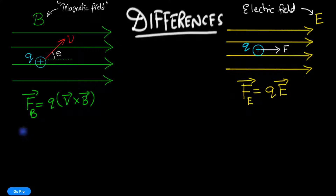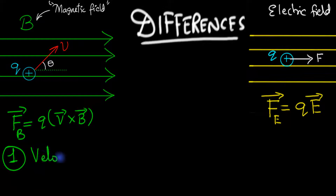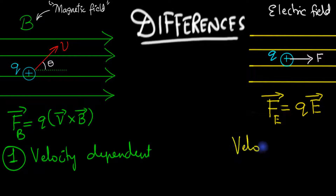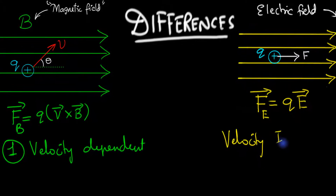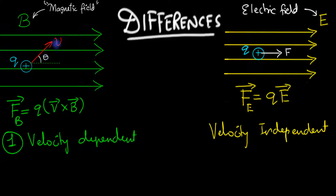The first difference — the obvious difference — is that the magnetic force is velocity dependent, whereas the electric force is velocity independent. If you want to know the electric force, whether the charge is at rest or moving, it doesn't matter; no velocity comes into the picture. But you can clearly see that velocity matters for the magnetic force — if the velocity is zero, then the force on that charge is zero.